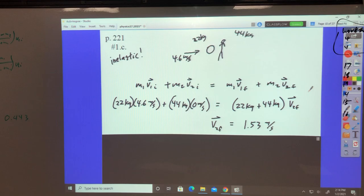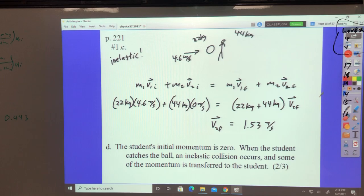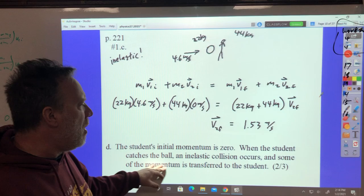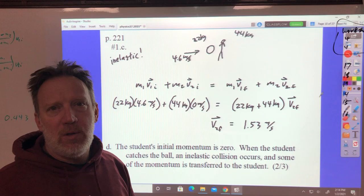D, explain what happens in terms of the momentum of the student and the momentum of the ball. Well, momentum is conserved. It stays the same. The student's initial momentum is zero. When the student catches the ball, some of the momentum is transferred to the student. Actually, the ball will keep a third of it, and the student would keep two-thirds of the momentum.